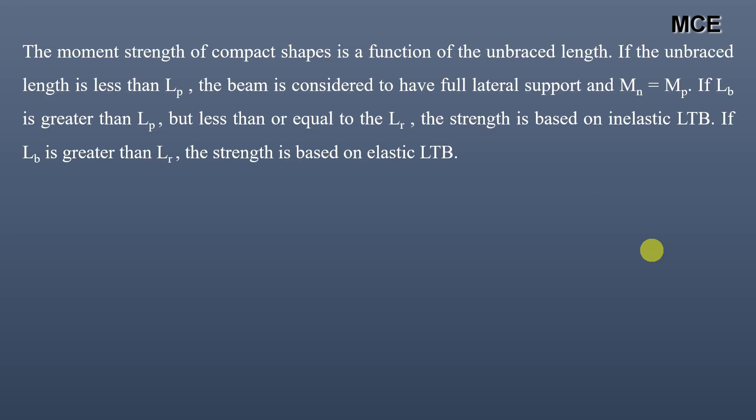The moment strength of compact shapes is a function of the unbraced length. If the unbraced length LB is less than LP, the beam is considered to have full lateral support and the nominal moment strength MN equals MP, the full plastic moment capacity. If LB is greater than LP but less than or equal to LR, strength is based on inelastic lateral torsional buckling. If LB is greater than LR, strength is based on elastic lateral torsional buckling.